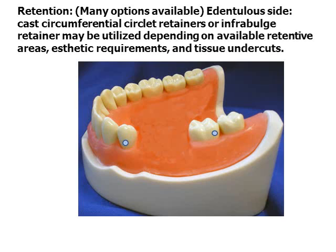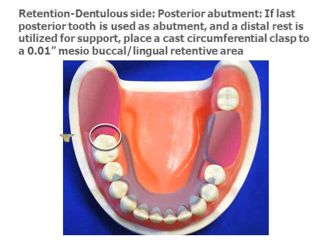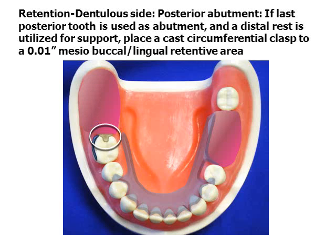Several options are illustrated. Wrought wire may be used, but cast clasp fabricated as part of the framework may be employed in most situations. Reciprocal elements such as plating, circumferential clasps, or vertical bars may be used. The simplest design is frequently the best, and if the partial is all tooth-supported, extra bracing is not required.